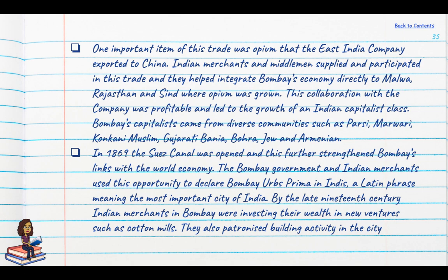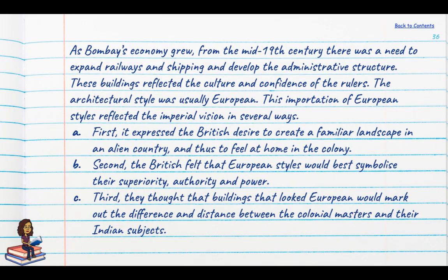By the late 19th century, Indian merchants in Bombay were investing wealth in cotton mills and patronising building activity. As Bombay's economy grew from the mid-19th century, there was a need to expand railways, shipping and administrative structures, and buildings reflected this culture of confidence. The architectural style was obviously European, and this importation reflected the imperial vision: it expressed a British desire to create familiar landscapes in an alien country; it symbolised their superiority and authority over Indians; and it marked the distance between colonial masters and their Indian subjects.